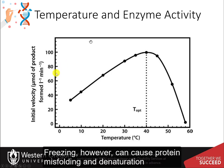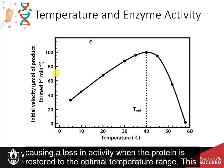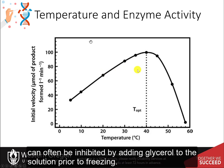Freezing, however, can cause protein misfolding and denaturation, causing a loss in activity when the protein is restored to the optimal temperature range. This can often be inhibited by adding glycerol to the solution prior to freezing.